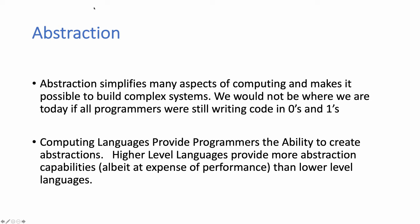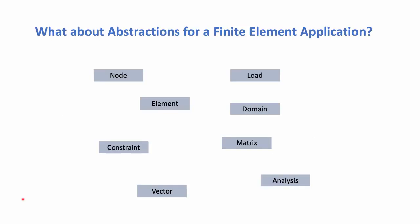Today, we're going to be looking at C++, which is a higher-level language relative to C. The abstractions we came up with for the finite element method included nodes, loads, elements, and constraints. We had some container objects — a domain — and we have matrices and vectors so that the elements can do their computations. We also have an analysis object which forms the analysis.